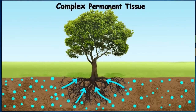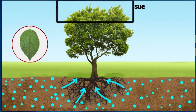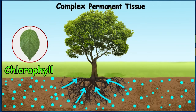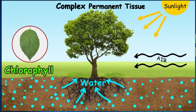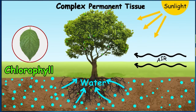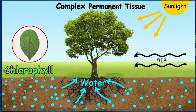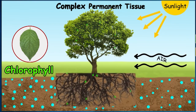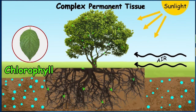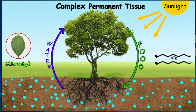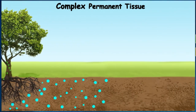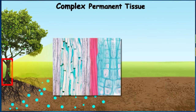Besides water, plants also require food to survive. The green part of the plant — the leaves — makes food using a green pigment called chlorophyll, sunlight, air, and water through photosynthesis. All the food made by the leaves has to reach all parts of the plant, including the lowermost root cells, which need energy to absorb water from the ground. So it's like a continuous cycle in a plant. The food in the form of sugar made in the leaves is transported with the help of another type of complex tissue called phloem.